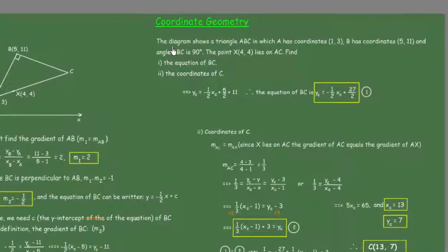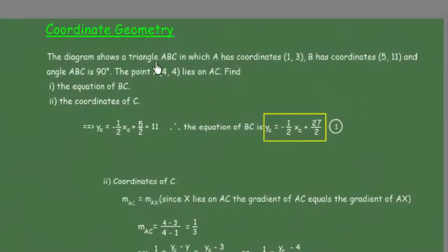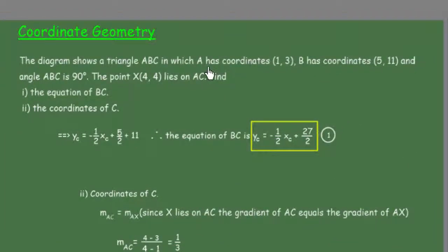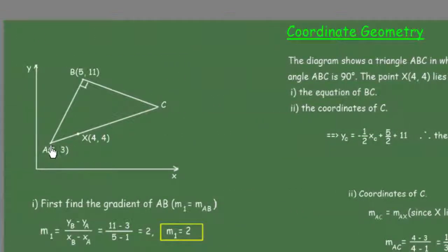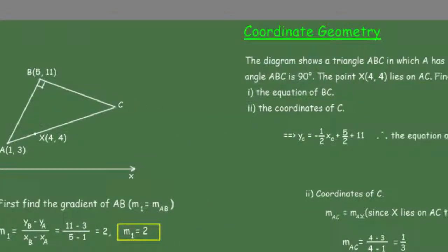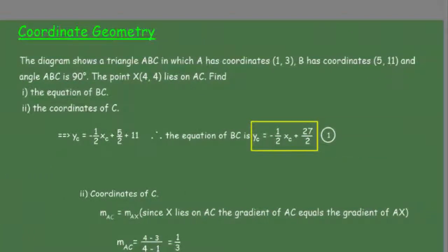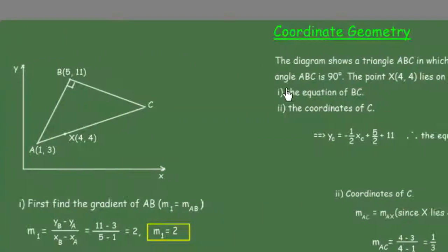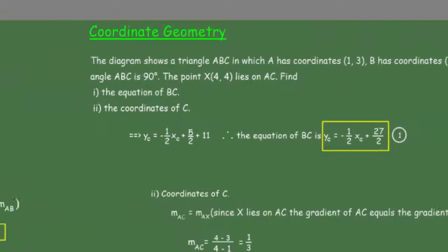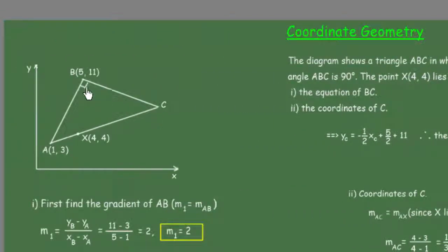Our exercise is about a diagram that shows a triangle ABC in which A has coordinate (1, 3), B has coordinate (5, 11), and angle ABC is 90 degrees.